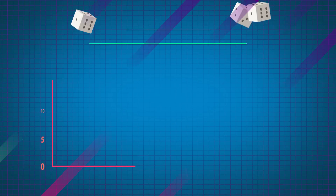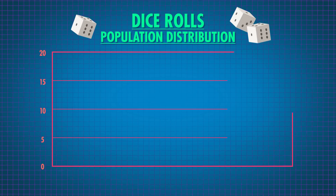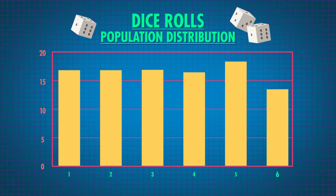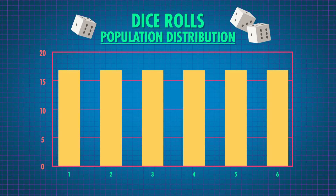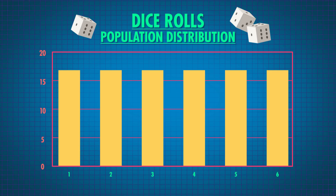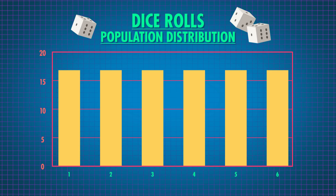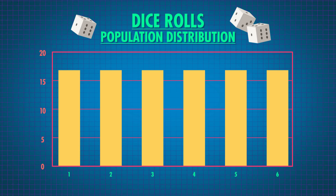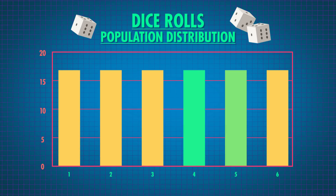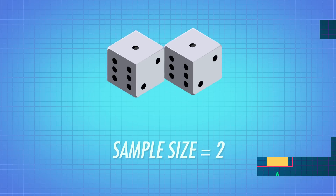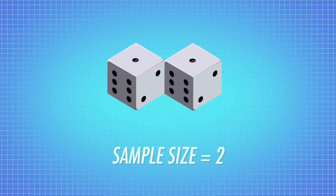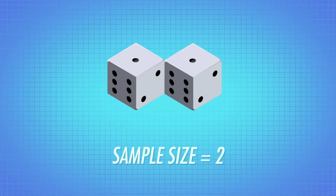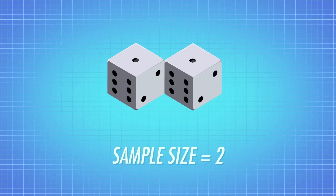Let's look at a simulation of the central limit theorem in action. For our first example, imagine a discrete uniform distribution — like dice rolls. The distribution of values for a single dice roll looks like this. With a sample size of 1, the regular distribution of dice values, there's one way to get each value. But we want to look at the mean of, say, 2 dice rolls, meaning our sample size is 2.